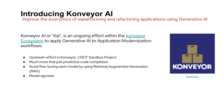Konveyor AI is working on a goal to improve the economics of replatforming and refactoring applications using generative AI. Konveyor AI is an ongoing effort in the ecosystem to apply generative AI to application modernization — it's a sandbox project within the CNCF. Konveyor AI is more than predictive code completion: it is not just writing specific code for a small situation, but takes into consideration your current codebase, looks at the patterns, and modernizes that technology into something new. A good example is migrating message-driven beans with JMS into reactive programming using Quarkus. To avoid fine-tuning, we use the RAG approach to do this.